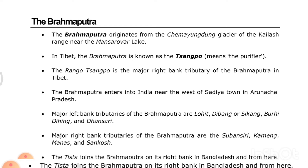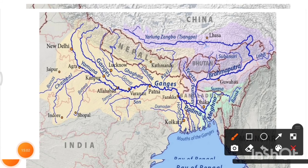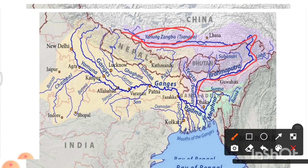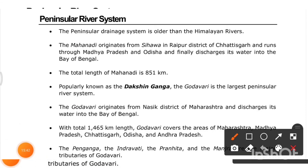This map shows how the Brahmaputra originates in Tibet, enters India, and flows into the Bay of Bengal. The Yamuna and Ganga flows are also visible. Students should practice locating these rivers on the map for better performance. Next, we discuss the peninsular river system, which is older than the Himalayan river system.